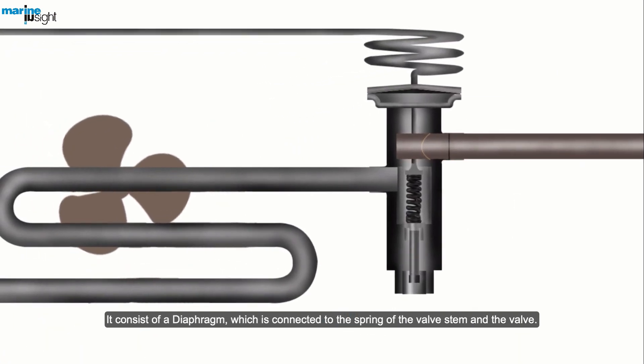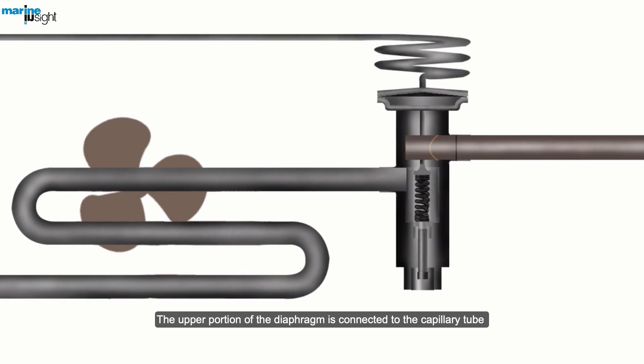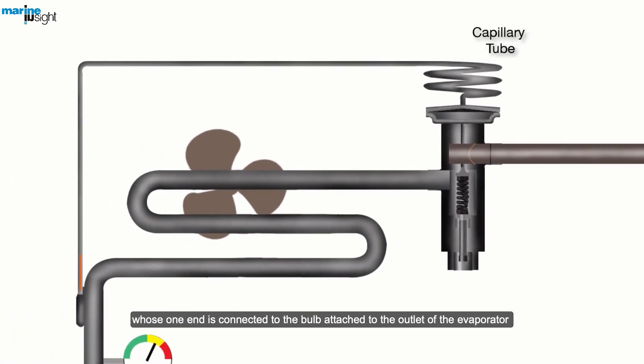It consists of a diaphragm, which is connected to the spring of the valve stem and the valve. The upper portion of the diaphragm is connected to the capillary tube, whose one end is connected to the bulb attached to the outlet of the evaporator containing small amount of liquid in a part of the bulb.